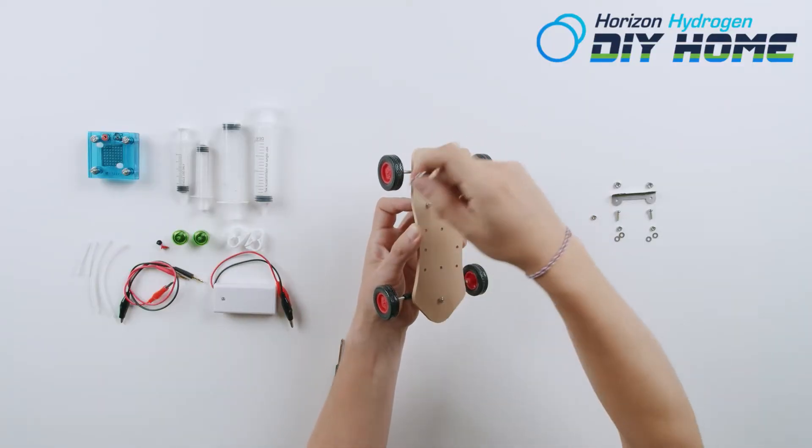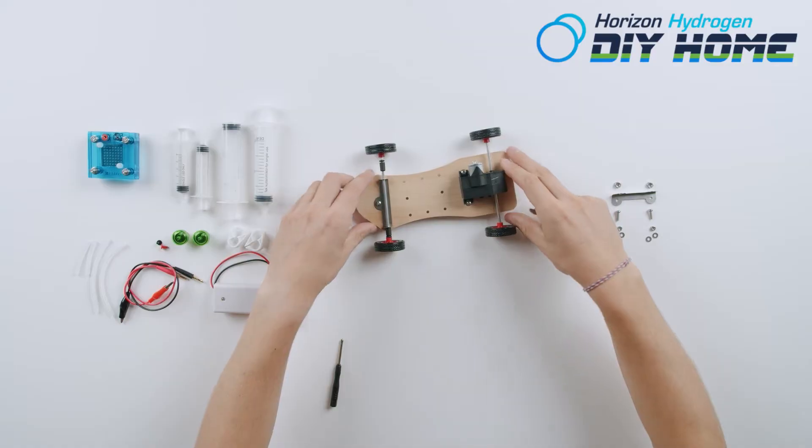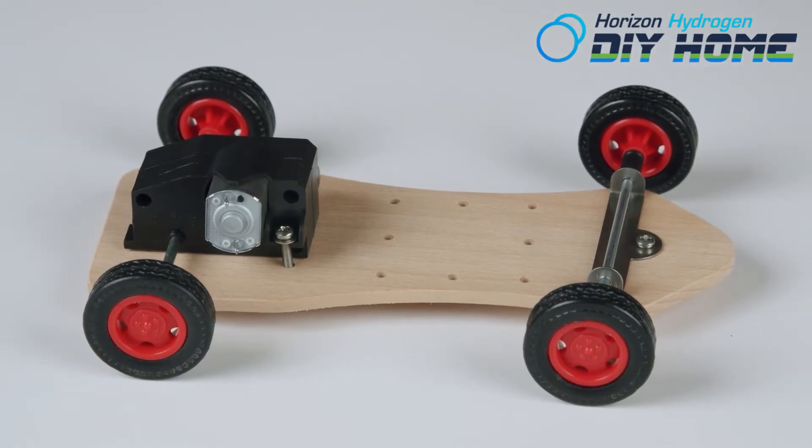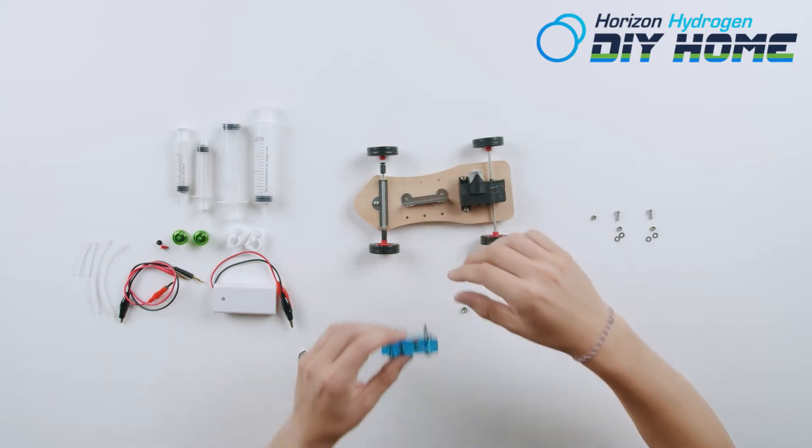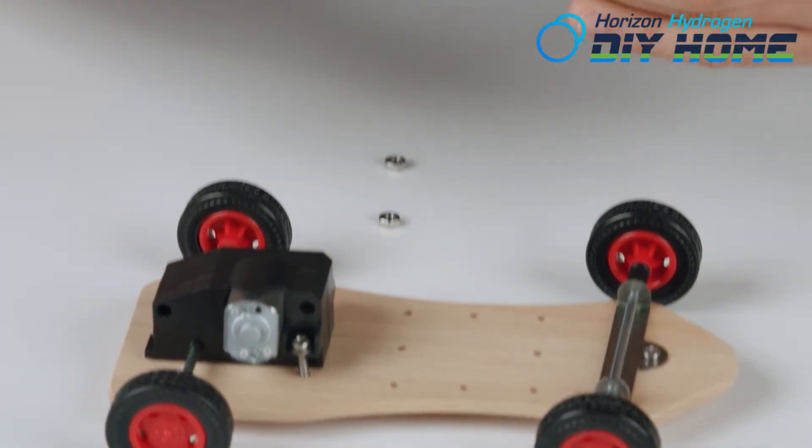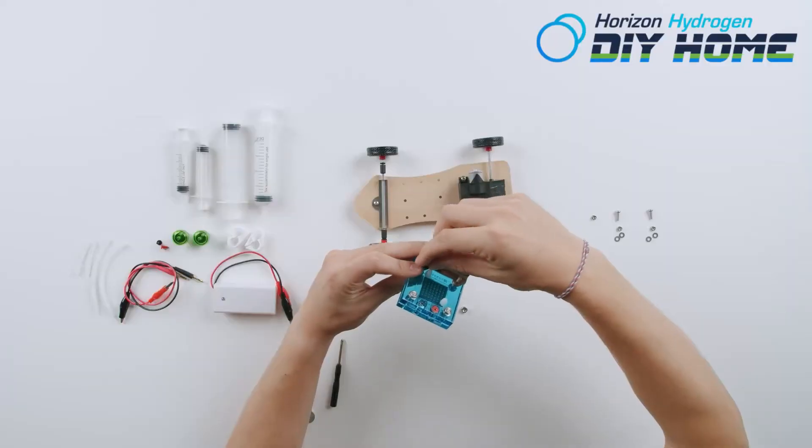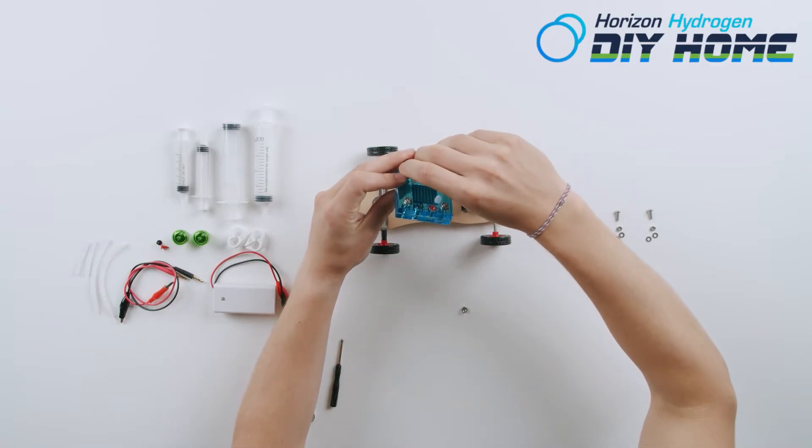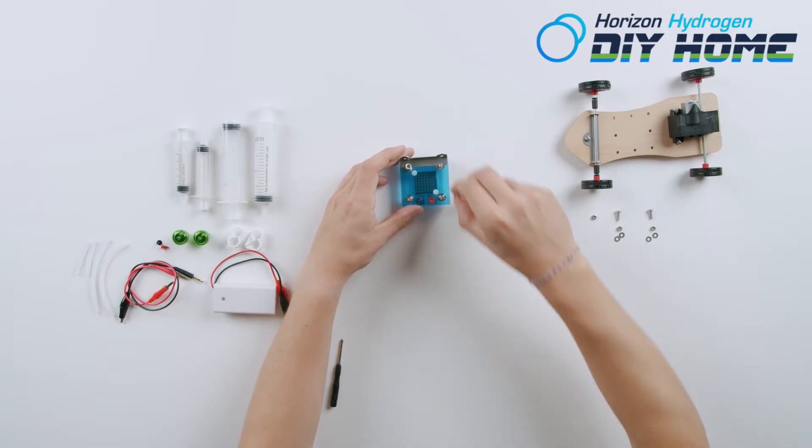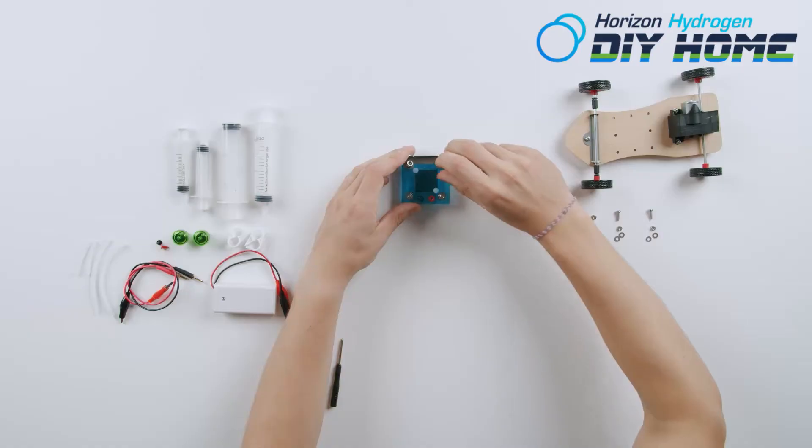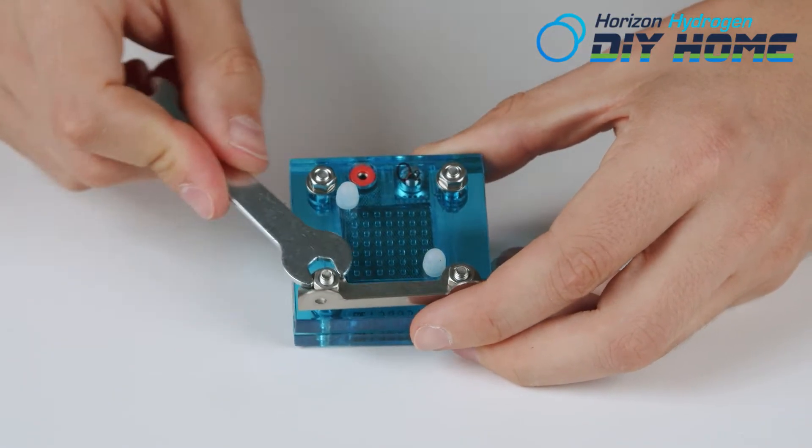Now it's time to install the reversible fuel cell. Inspect your fuel cell. Does it have two larger screws at the bottom of the fuel cell? If not, pause video and install now. It's time to install the fuel cell holder onto the bottom of the fuel cell. Fasten using big nut provided. Tighten with slight pressure.